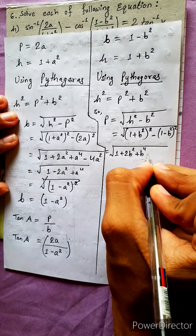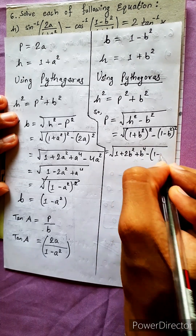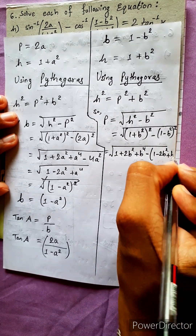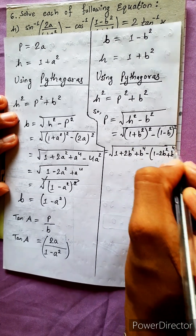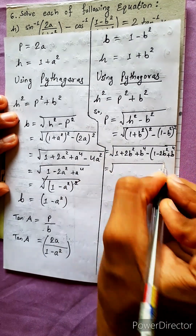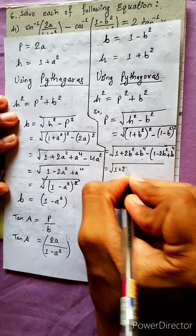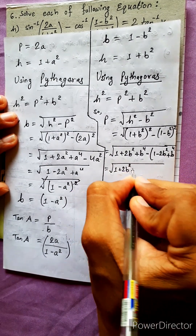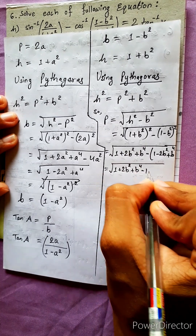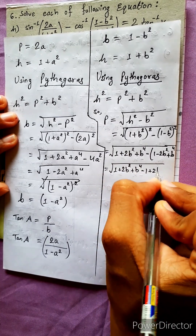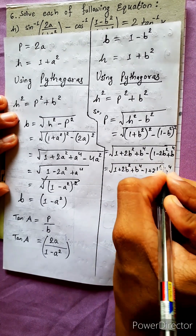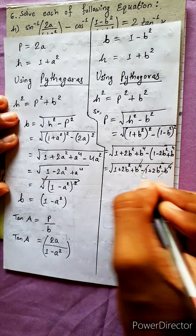Direct calculation: expanding (1 + B²)² gives 1 + 2B² + B⁴, and (1 - B²)² gives 1 - 2B² + B⁴. Subtracting: numerator becomes 4B², and the B⁴ and constant terms cancel out.